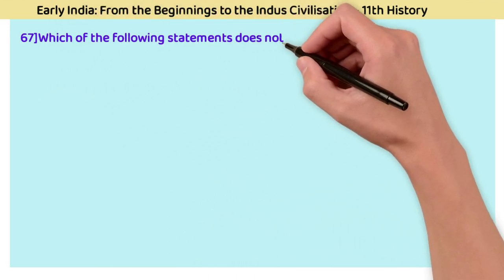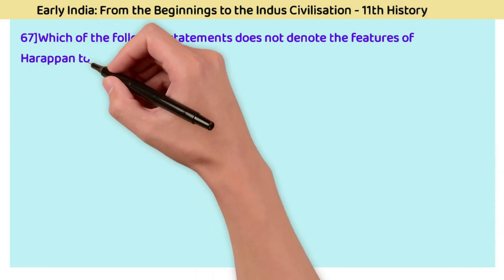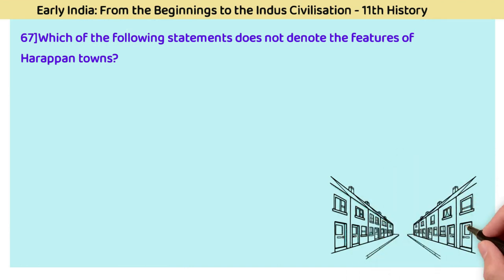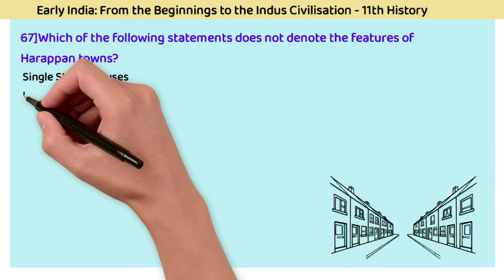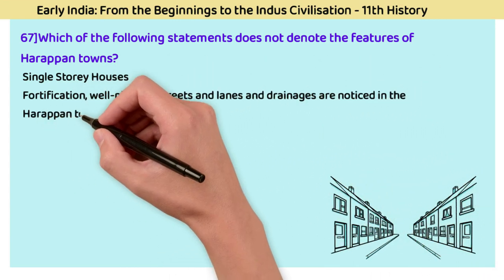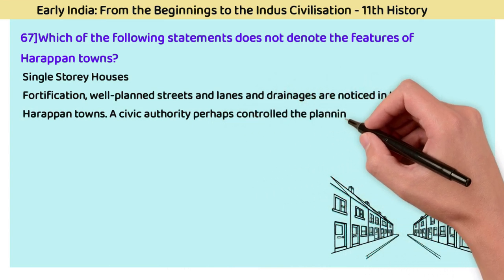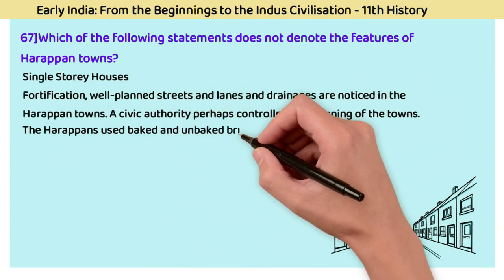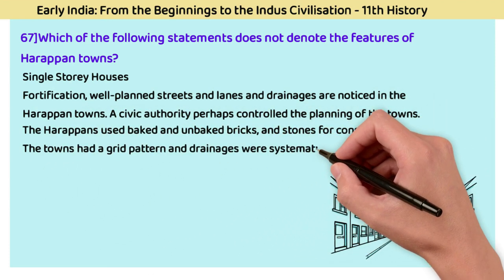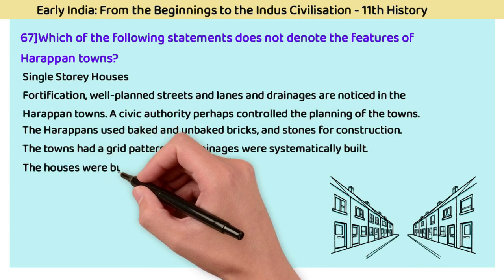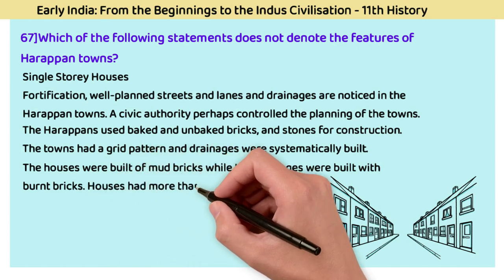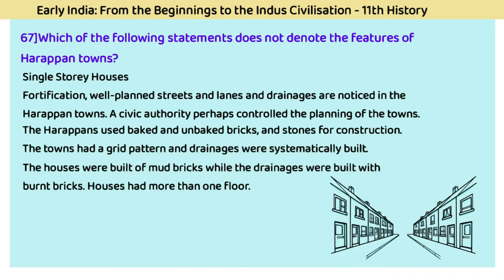Question 67: Which statement does not denote a feature of Harappan towns? The answer is single-storey houses. Harappan towns had fortifications, well-planned streets, lanes, and drainages, with a civic authority controlling town planning. Harappans used both baked and unbaked bricks and stones for construction. The towns had a grid pattern and systematic drainage systems. Houses were built of mud bricks, drainages with burnt bricks, and houses had more than one floor.